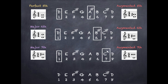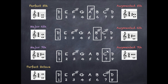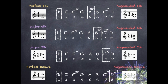Finally, to create an augmented octave, first write out a perfect octave. We go from the first note of the scale to the eighth note and stack them on top of each other. To create the augmented octave, sharpen the top note of the perfect octave, so D becomes D sharp, and then stack them on top of each other.